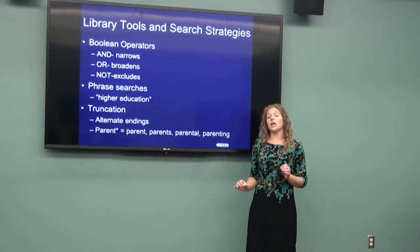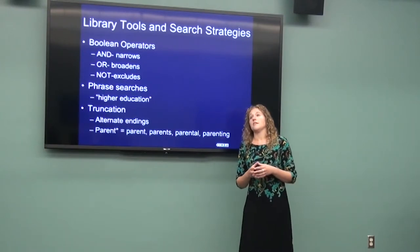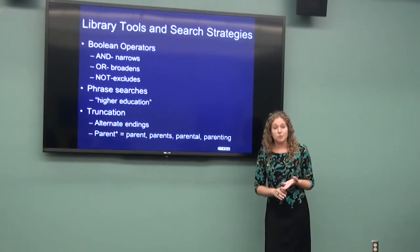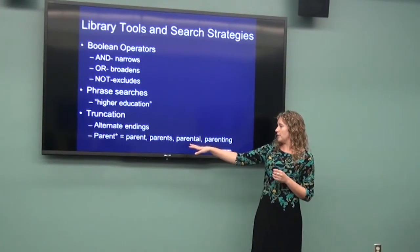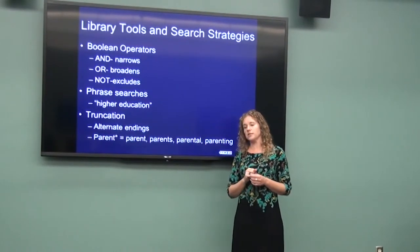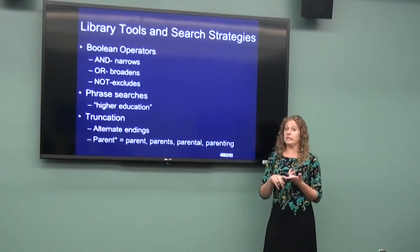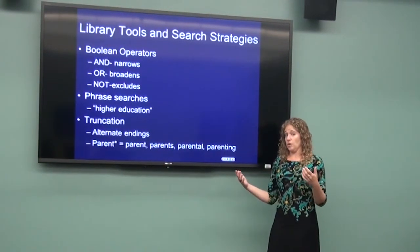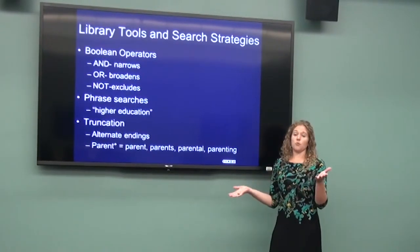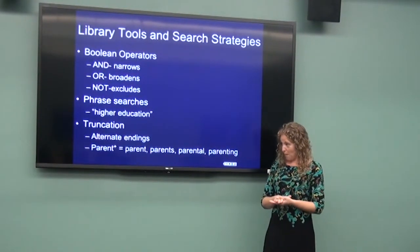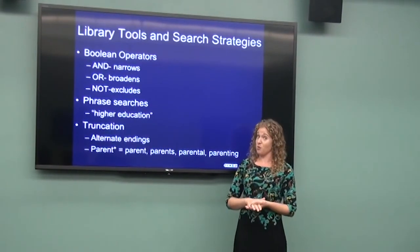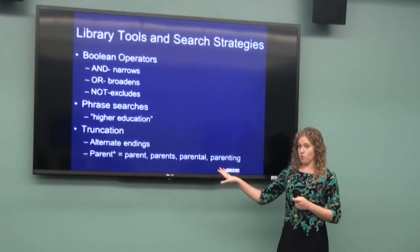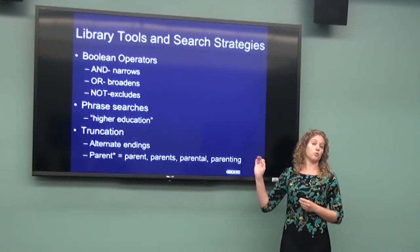However, a quick caveat — truncation can also go horribly wrong if the root word is too broad. Our favorite example is the word 'cell.' If we did C-E-L-L with an asterisk, it would retrieve anything from cells, cell phones, cellular phones, cellulitis, cellulite, and so on — which is not relevant to the topic at all. So there are opportunities when truncation is very helpful and other options where it might come back to bite you. Be careful, but they are very helpful tools.